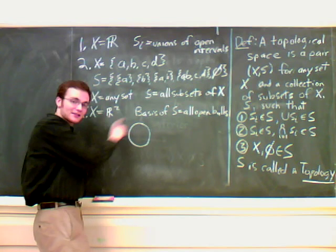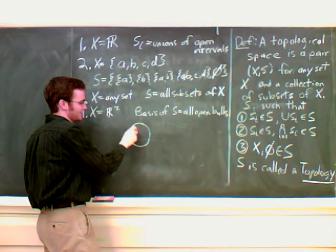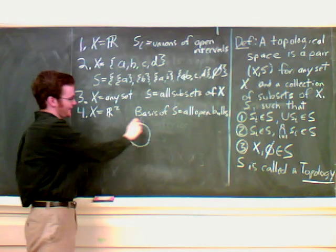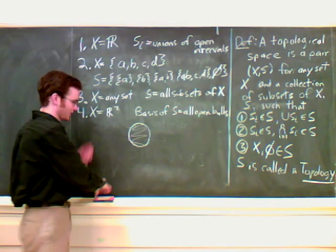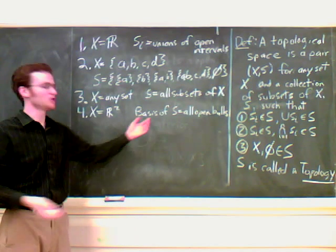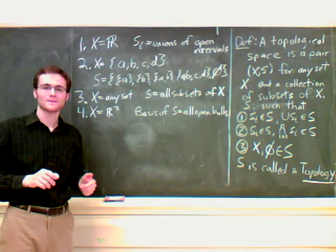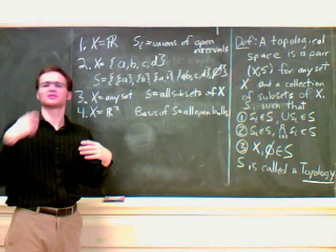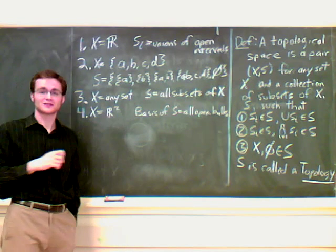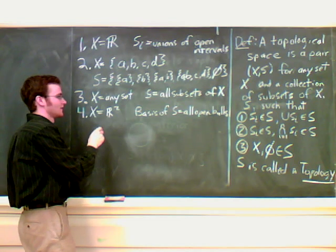An open ball is you take the circle or a ball in three dimensions or higher, but it doesn't include the boundary. It includes everything on the inside, but not the boundary, and that's what an open ball is. This is the usual topology, the standard topology, just like this was the standard topology of R. It's just the one that we're more intuitively familiar with, but it's not the only possible one. I mean, you could have this discrete topology on either of those two spaces.